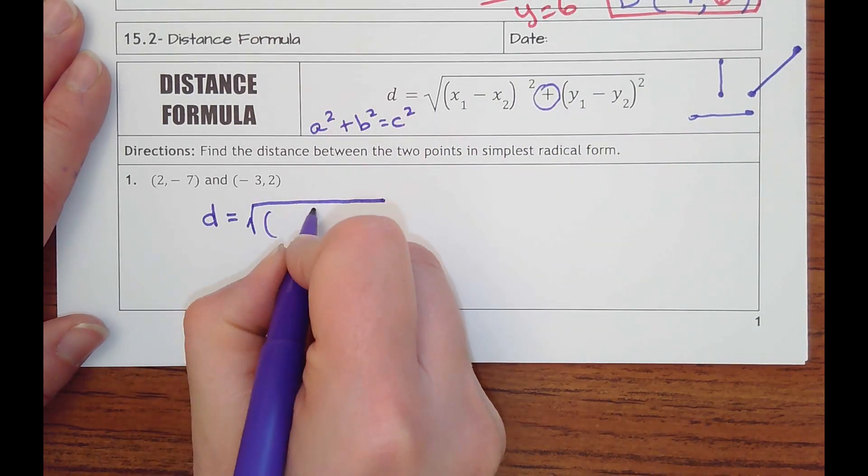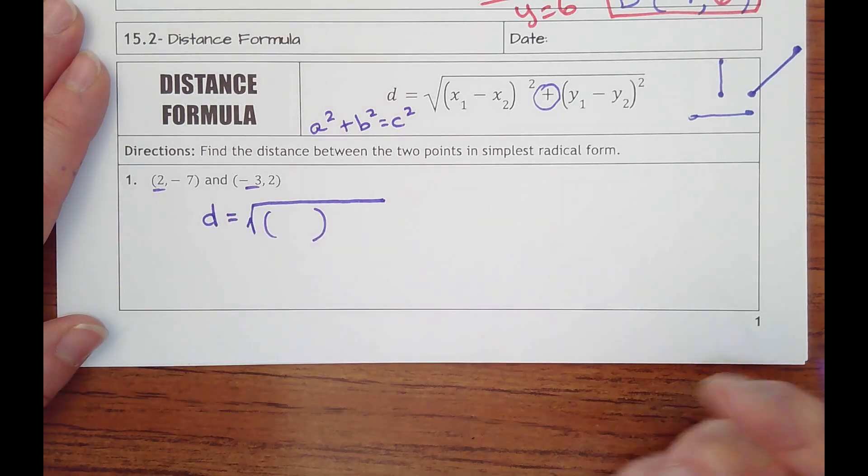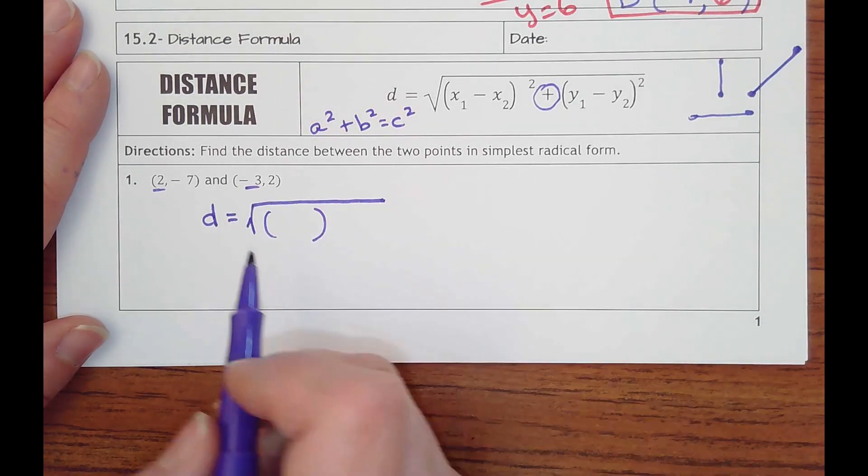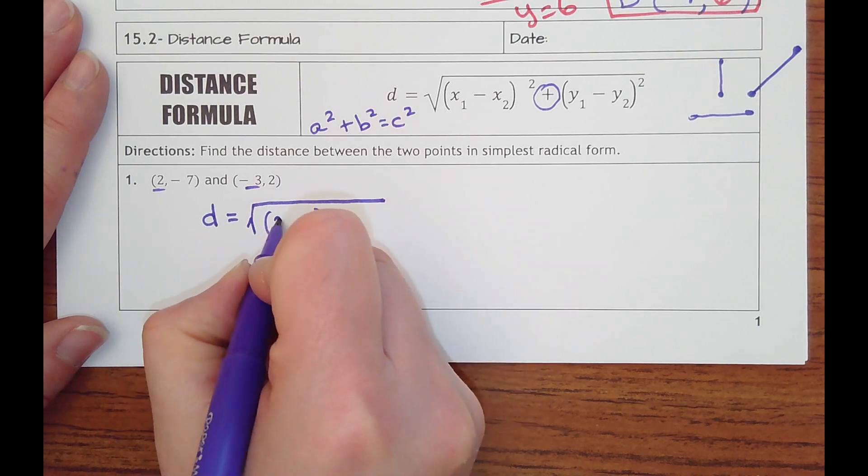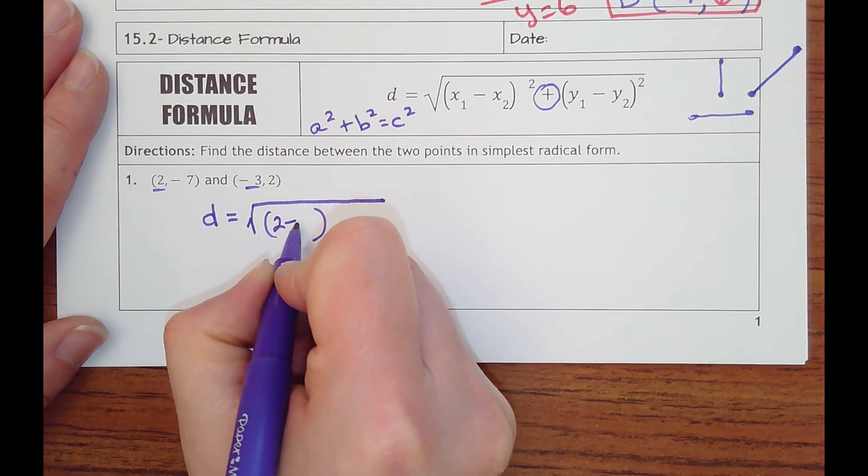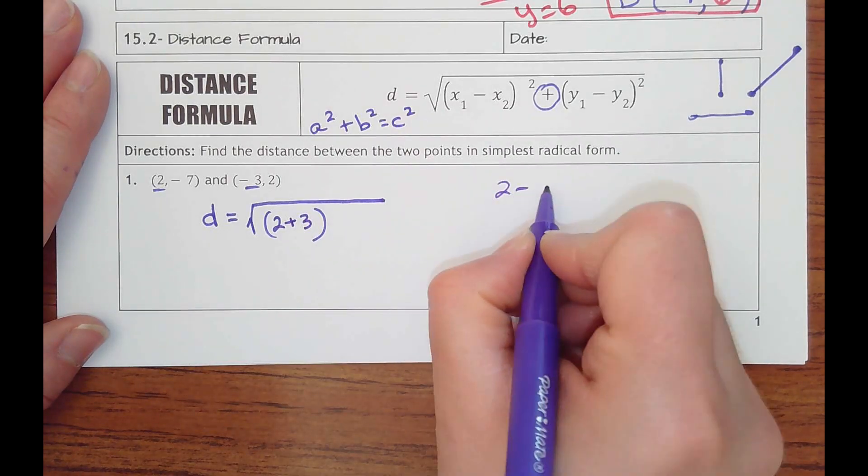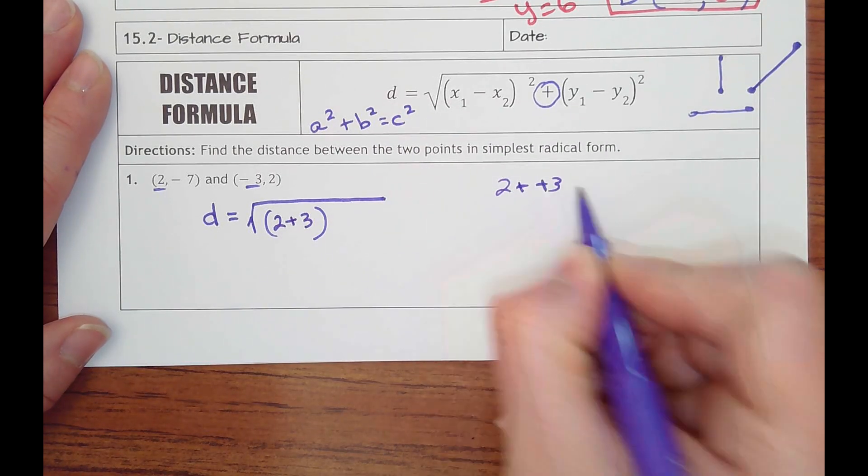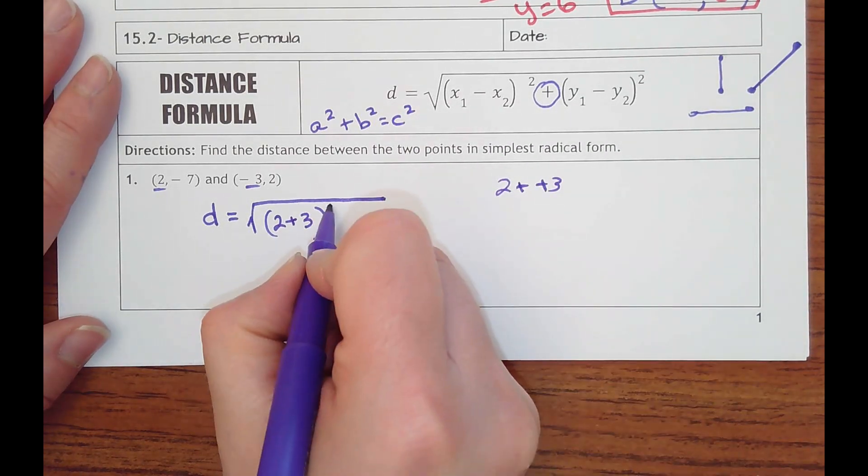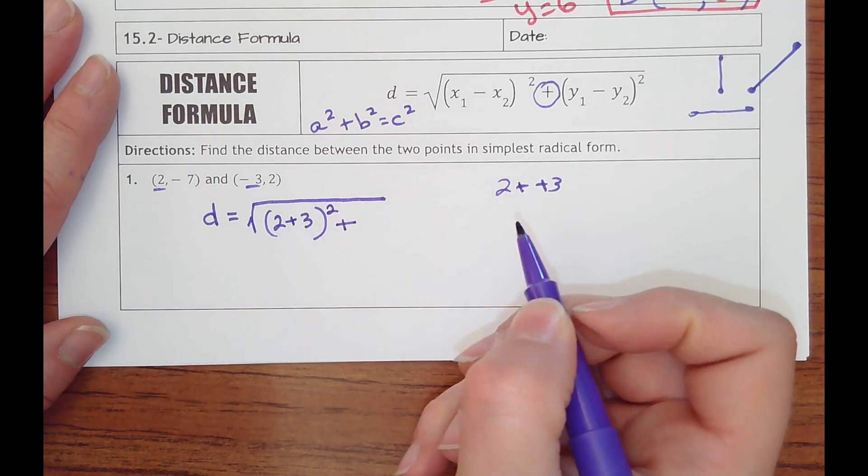So I'm going to first subtract my x values. It doesn't matter which order you go. You almost can't screw it up. So I'm going to go 2 minus negative 3, which will turn into a plus 3, right? 2 minus a negative. We can't subtract a negative, so that turns into 2 plus 3, that quantity squared, plus sign in between.